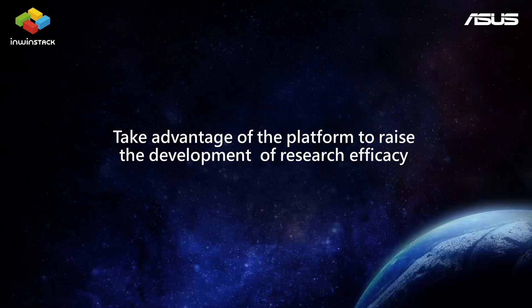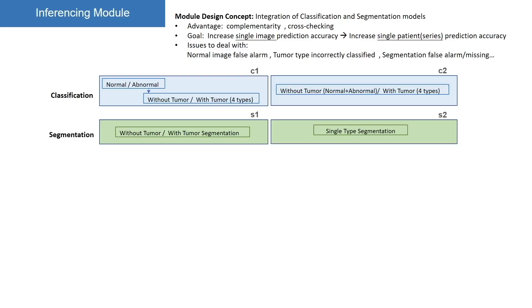Next, we want to introduce our special platform and take advantage of it to raise the development and research efficiency. Here is the innovative approach we developed by ourselves for integrating models together for better performance — we call it the module. The module design concept is to integrate classification and segmentation models, along with rule-based algorithms from specialists together. The goal of the module architecture is to increase comprehensive adjustment accuracy and reduce noise.